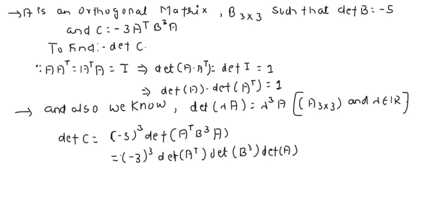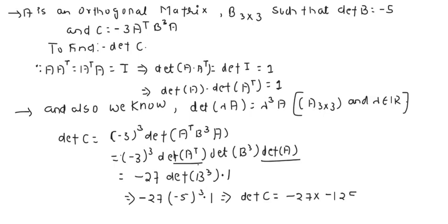So this is nothing but minus 27. And we know that determinant of A transpose and determinant of A is 1, so here we will just get determinant of B cube. This is nothing but minus 27 and the determinant of B cube will be minus 5 whole cube. So overall what we are going to get here is determinant of C equals minus 27 multiplied with minus 125 which equals 3375.